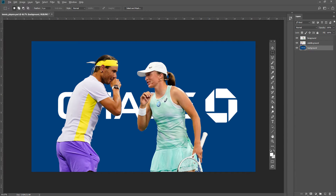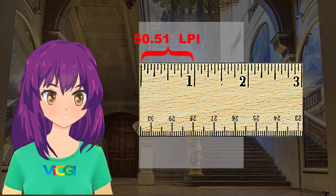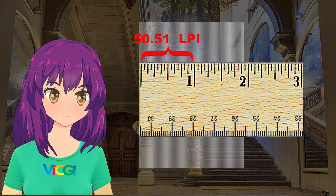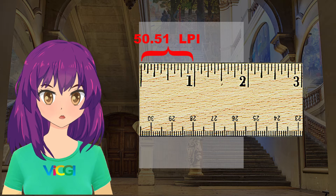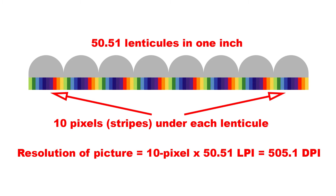We will not touch the process of separating objects from the background because the new version of Photoshop has a very easy way to do it and there are also many videos about this topic. Let's set the resolution of our image before interlacing it. Remember the pitch test result of our lens is 50.51 LPI, meaning in 1 inch there are 50.51 lenticules. For example, if we want to have 10 pixels under each lenticule, then the resolution of the image should be 50.51 times 10, which equals 505.10 DPI.